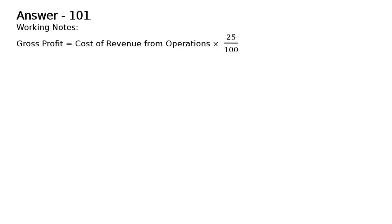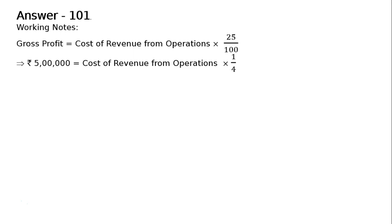Answer 101, working notes. Gross profit is equal to cost of revenue from operations multiplied by 25 percent. It is written that gross profit is 25 percent on cost, meaning gross profit of Rs. 5 lakhs equals cost of revenue from operations multiplied by 1 by 4.